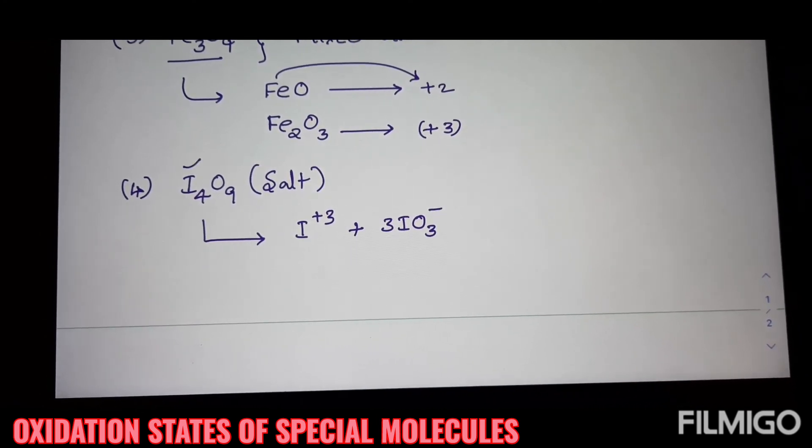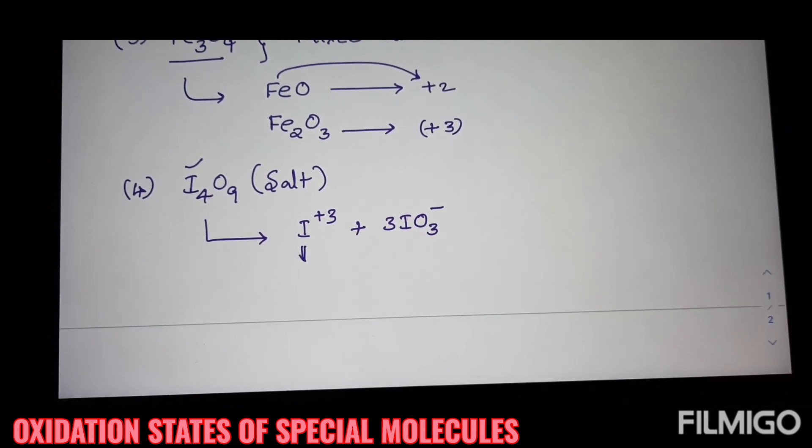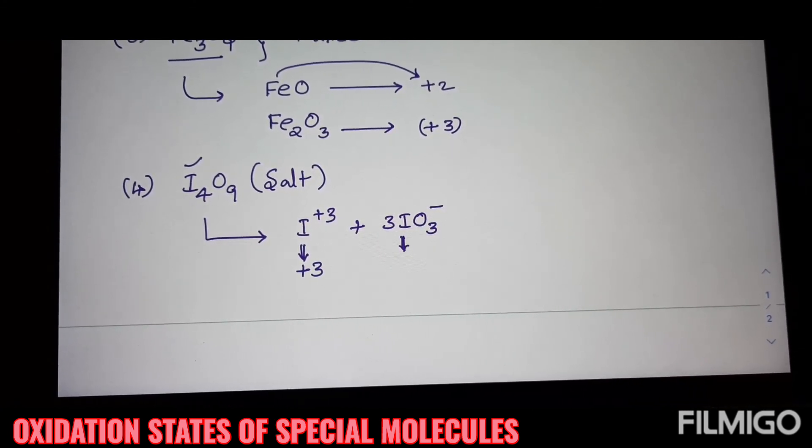I plus 3 simply has plus 3 oxidation state and IO3 minus has an oxidation state of plus 5.